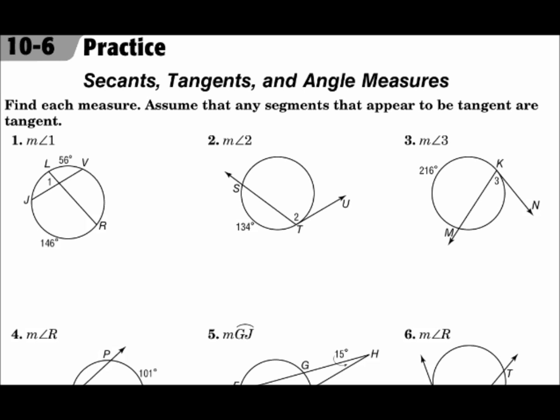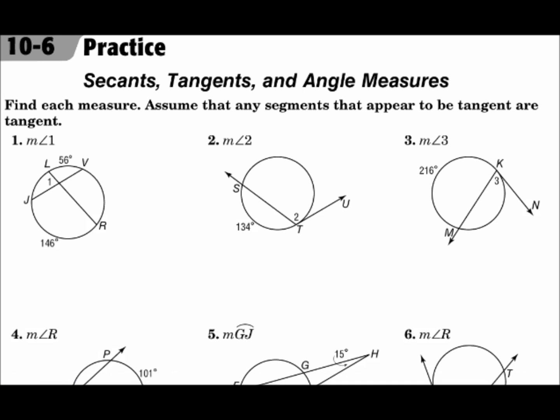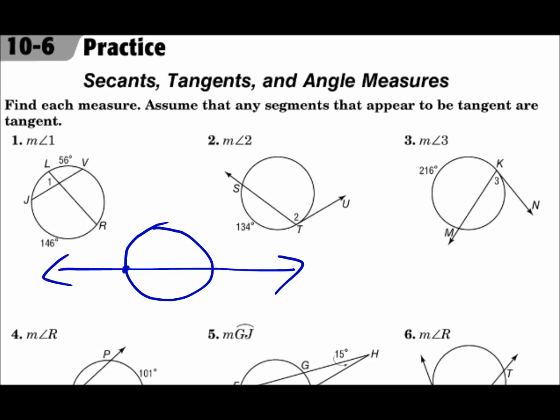We are focused on angle and arc measures in the circle. There's a new vocab word: secants. A secant is a line that intersects a circle twice, compared to a tangent that intersects a circle just once. A tangent intersects a circle once and a secant intersects it twice.